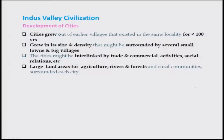It is believed that cities grew out of villages that existed in the same locality, perhaps for around 100 years, and grew in size and density, surrounded by several small towns and big villages. The cities might have been interlinked by trade, commercial activities, and social relations. Large land areas for agriculture, rivers, forest, and rural communities surrounded each city, meaning agriculture, rivers, and forests provided products useful for day-to-day life — making each city self-sustainable, and we can learn from this.